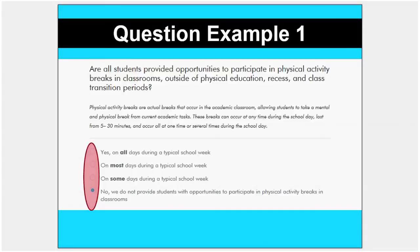The question is followed by four answer choices. The bottom choice corresponds to the guideline not being in place currently at your school. The next one is if it's somewhat in place, then mostly in place, and finally the top choice is if it's fully in place at your school. Since each school is unique in how it provides these opportunities, the choices allow for adoptability, autonomy, and flexibility at your school.